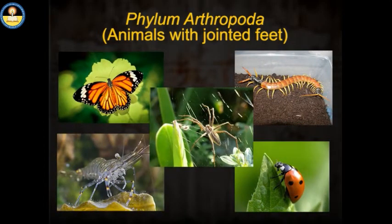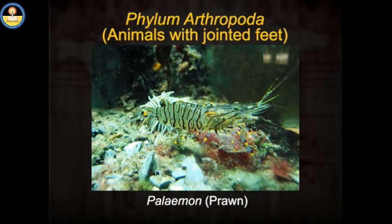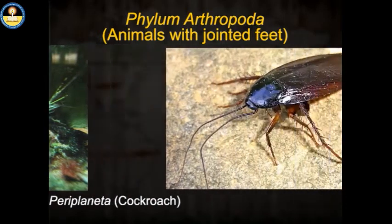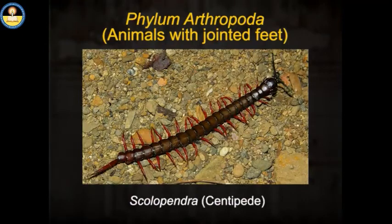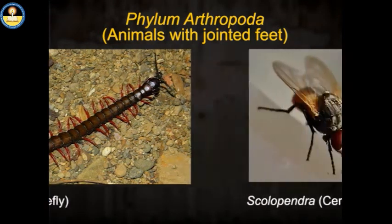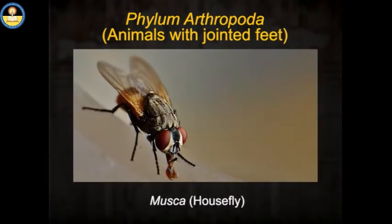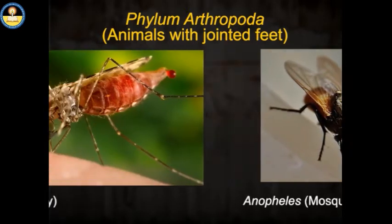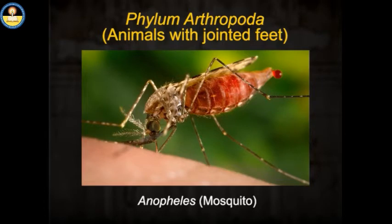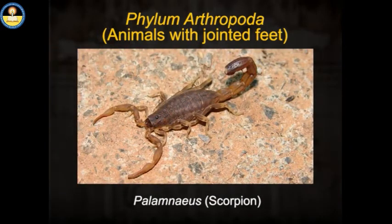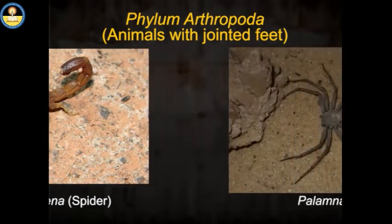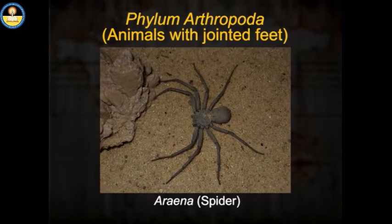Some animals falling in this phylum: Penaeus (prawn), Periplaneta (cockroach), Scolopendra (centipede), Musca (housefly), Anopheles (mosquito), Apis (honeybee), Palamnaeus (scorpion), and Aranea (spider).